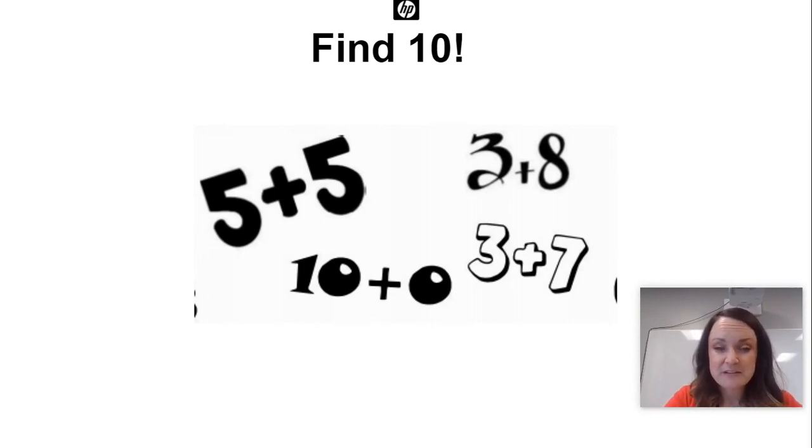So I've got on the screen four different expressions for you. Can you find which ones are equal to 10? Five and five is, you got it, 10. 10 plus zero, also 10. Three and eight, is that equal to 10? Three plus seven is equal to 10. You're right, you found three different ways to make 10. The one that did not make 10 was three plus eight. What is that? One more, very good, that's 11. Excellent.